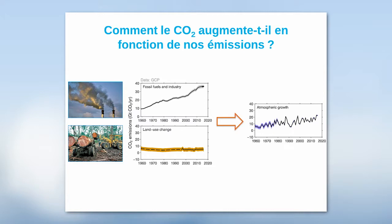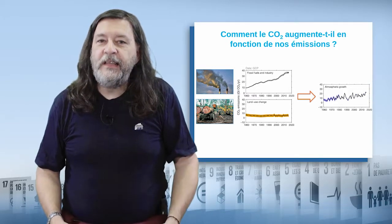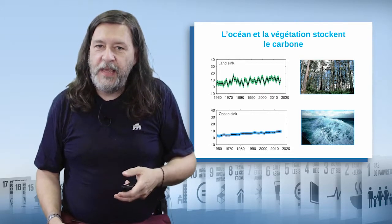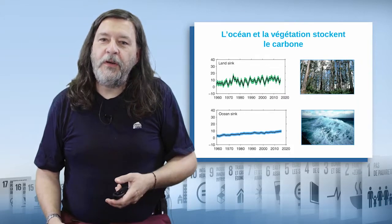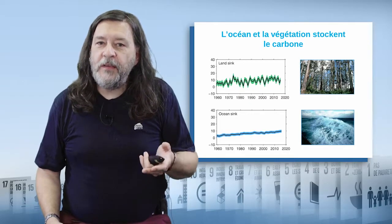If you look at the growth of CO2 presence in the atmosphere, the accumulation is in fact much slower than the emissions themselves. In truth, only about half of our emissions end up in the atmosphere. That can be linked to the fact that we have two great carbon sinks: on the one hand, vegetation, and on the other hand, the oceans — they store about half of the carbon we emit. The ocean sink is relatively continuous, but for vegetation, things vary greatly from one year to another, depending on weather or climate.